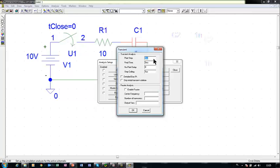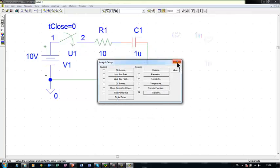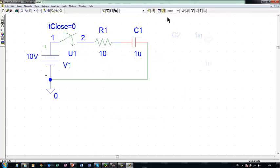And we have to select a print step, which is zero, because there is no print in this exemplary circuit, final time, and step ceiling. And now we are ready to start a simulation. So let me press simulate.